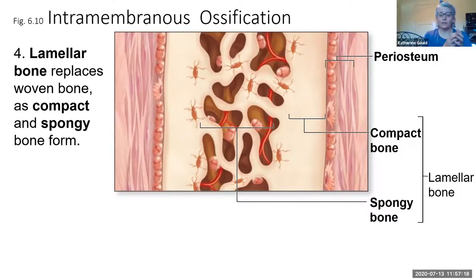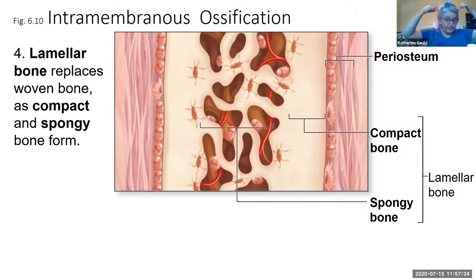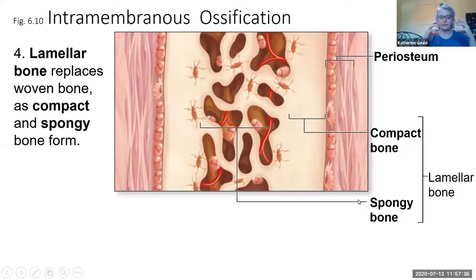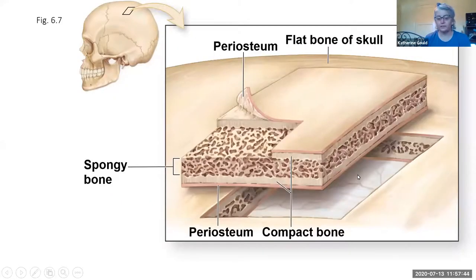If we look at a fetal skull, we can actually see denser spots, especially in the parietal bones, where the ossification centers are. We can also see ossification centers in other locations as well. So that's intramembranous ossification — it starts inside a layer of soft connective tissue at an ossification center and creates mostly the flat bones of the skull.